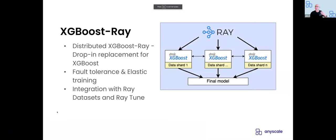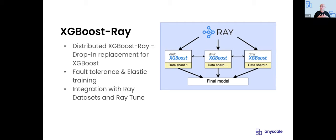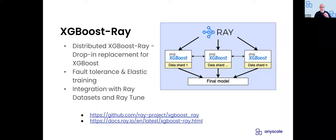XGBoost Ray is a distributed training framework — while XGBoost can use multiple cores on a single machine, XGBoost Ray allows you to take training across multiple nodes in a data-parallel fashion. Each worker gets a copy of the model and trains on a section of the data. It's fault-tolerant using Ray's actor model. I'll skip the deep dive here and show you how it works in the demo.